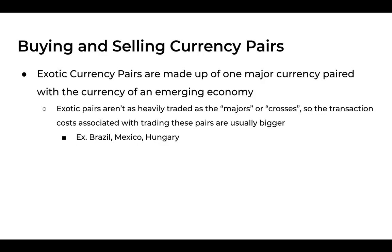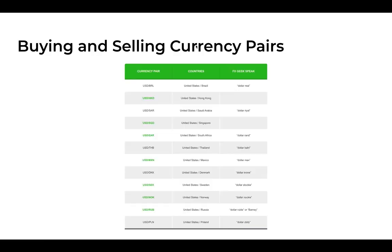Finally, we have exotic currency pairs. Exotics are made up of one major currency paired with the currency of an emerging economy. Exotic pairs aren't as heavily traded as the majors or crosses, so the transaction costs associated with trading them are usually bigger. Examples of emerging economies include Brazil, Mexico, and Hungary. Here's a list of exotic pairs — many are paired with the USD, including Brazil, Saudi Arabia, Thailand, Mexico, and Denmark. We'll discuss which ones to pay attention to later in the series.